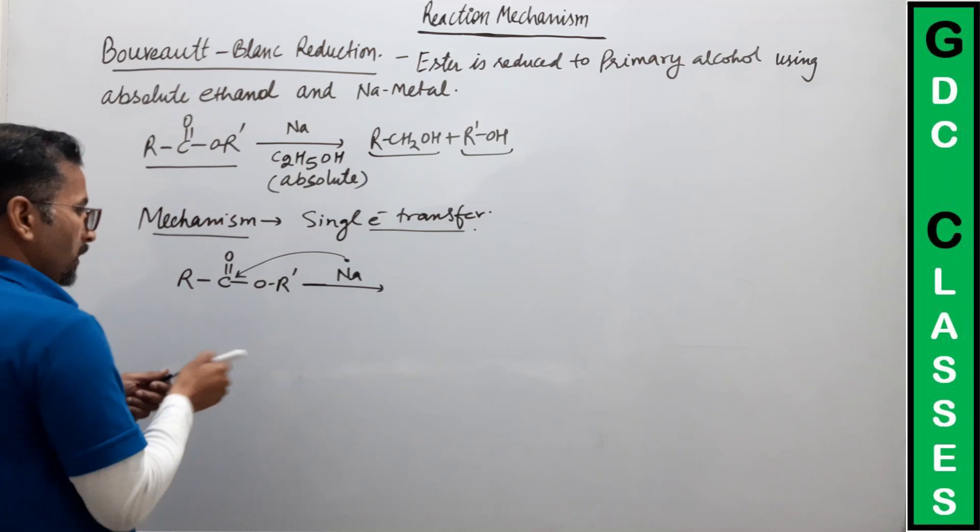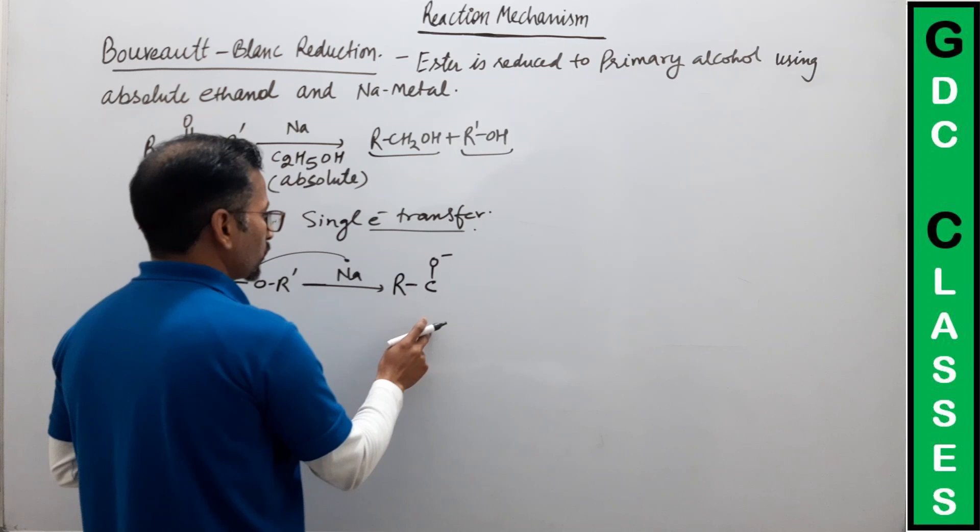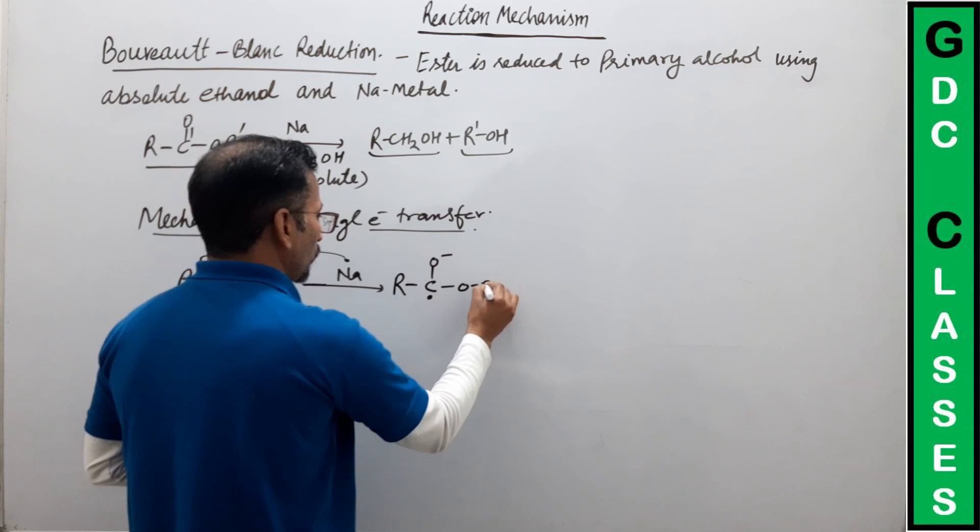जैसे ही sodium ने यहां electron दिया, next bond shift हो जाता है oxygen पर। तो हमारे पास जो product बनने वाला है: oxygen पर negative charge आ चुका है और carbon पर radical बन चुका है — C, O, R'. Clear?